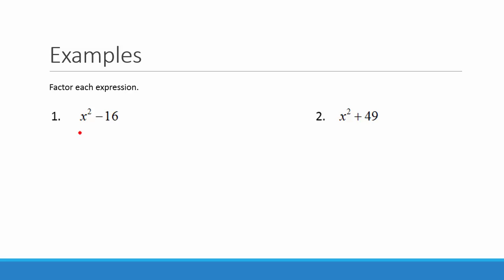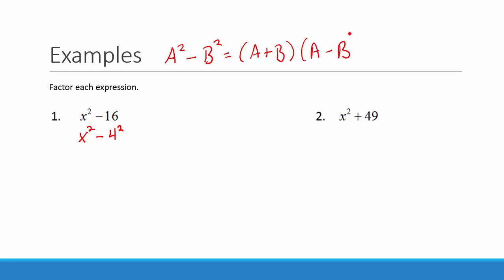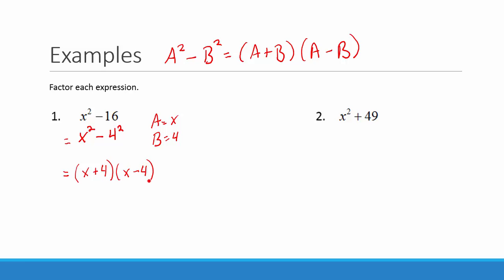In our first example, we have x squared minus 16. Since 16 is a perfect square equal to 4 squared, we apply the formula a squared minus b squared equals the quantity a plus b times the quantity a minus b. Here a equals x and b equals 4, so the factored form is x plus 4 times x minus 4.